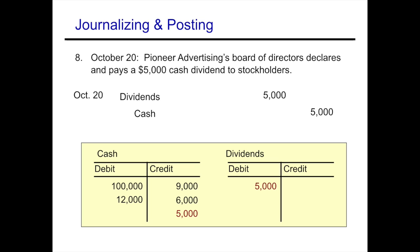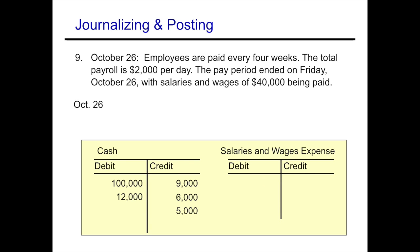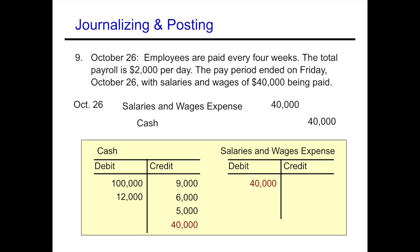On October 26th, employees are paid every four weeks. The total payroll is $2,000 per day. The pay period ended Friday October 26th with salaries and wages of $40,000 being paid. We debit salaries and wages expense for $40,000 and credit cash for $40,000. We then move that from the journal to the ledger, debiting salaries and wages expense and crediting cash for $40,000.